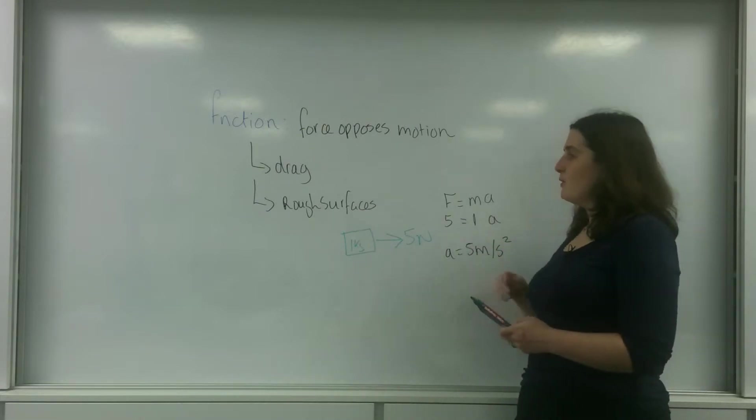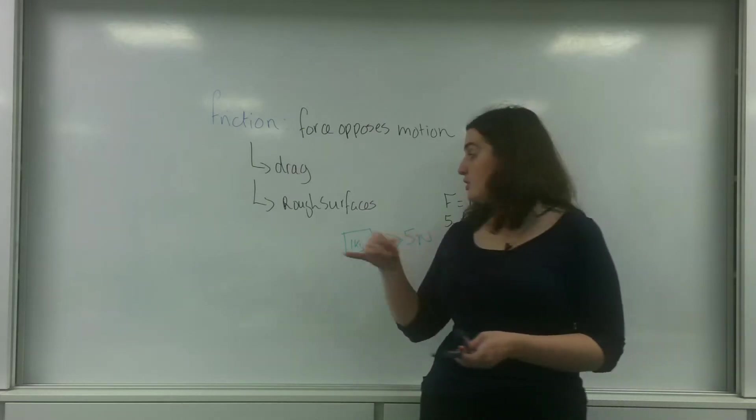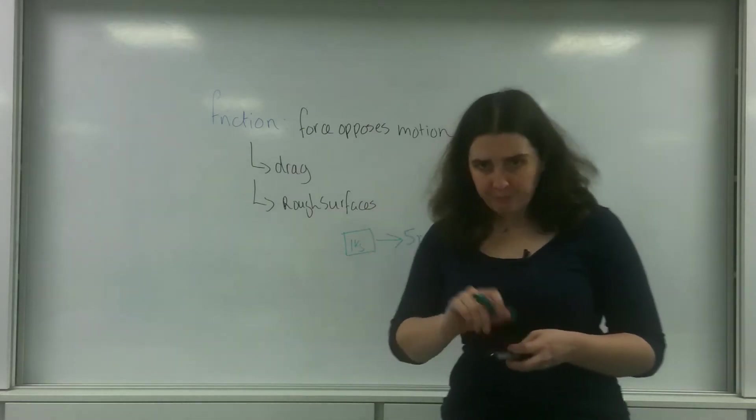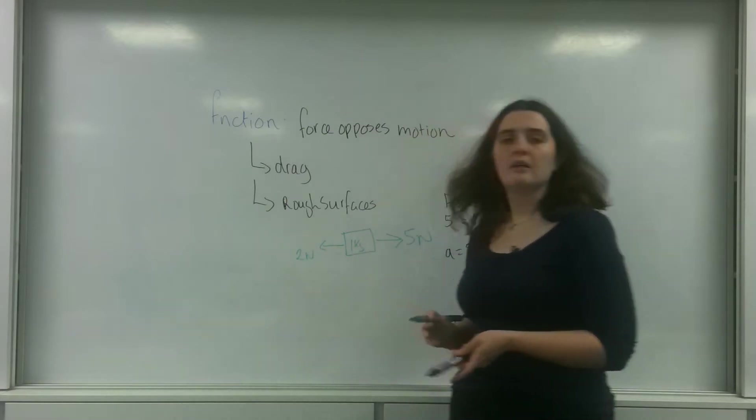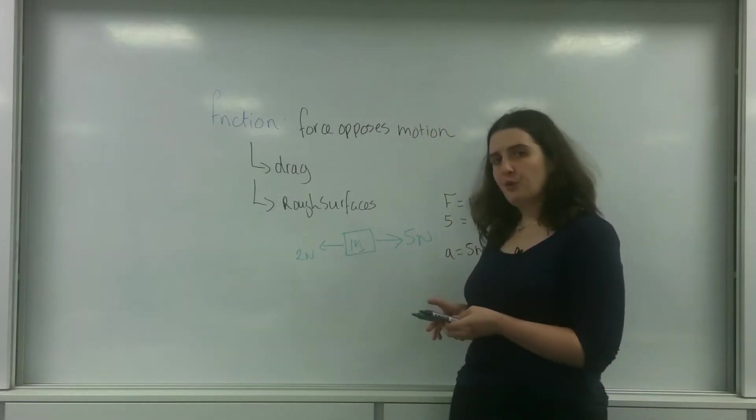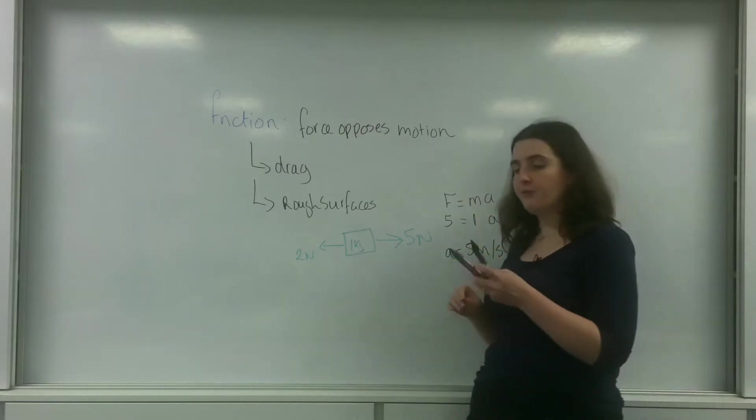Now, if there was a friction force, so there was a resistance going the other way, a friction here of, let's say, 2 Newtons, my resultant force, the force that I'm going to be using in this formula, would be different. So this is without.